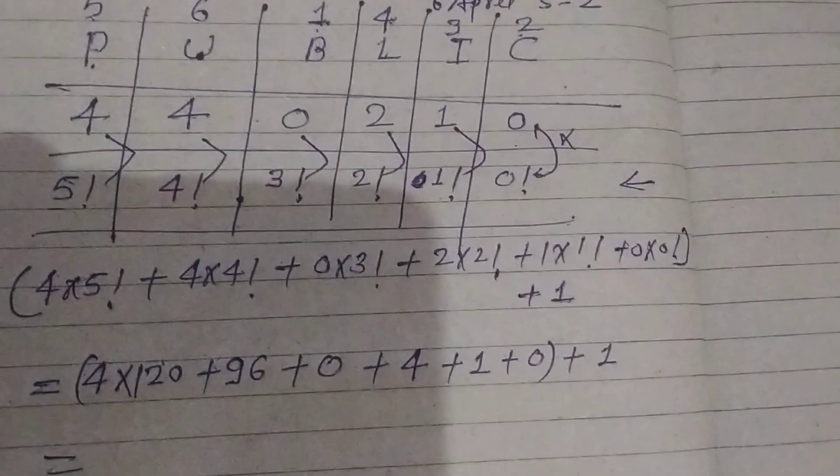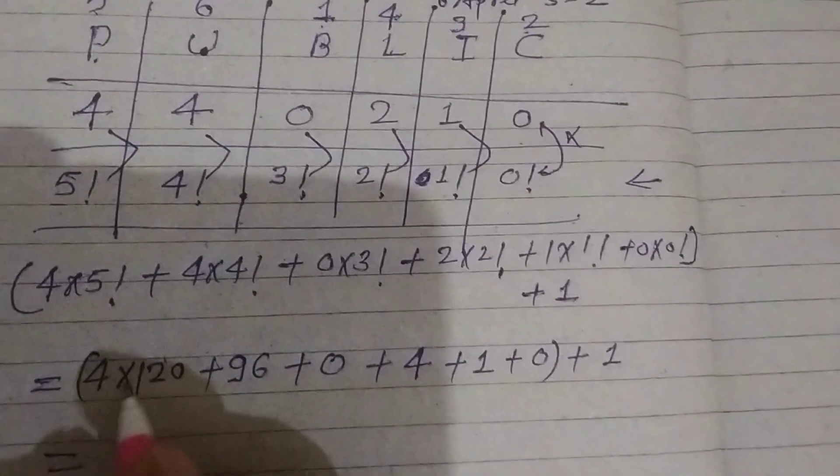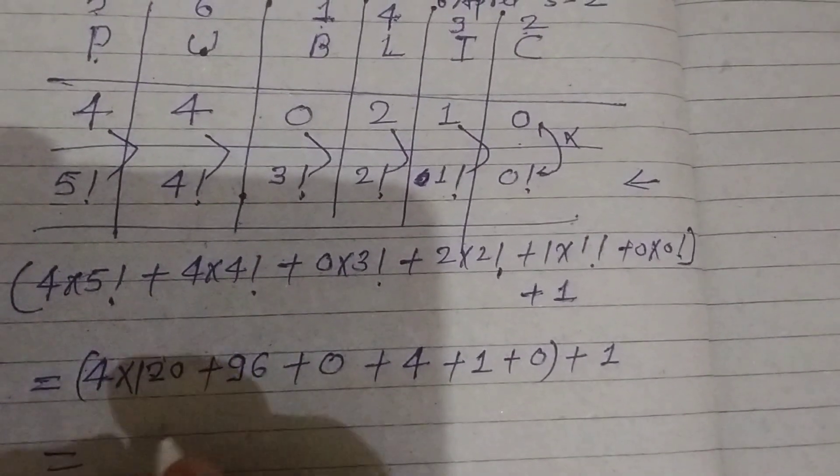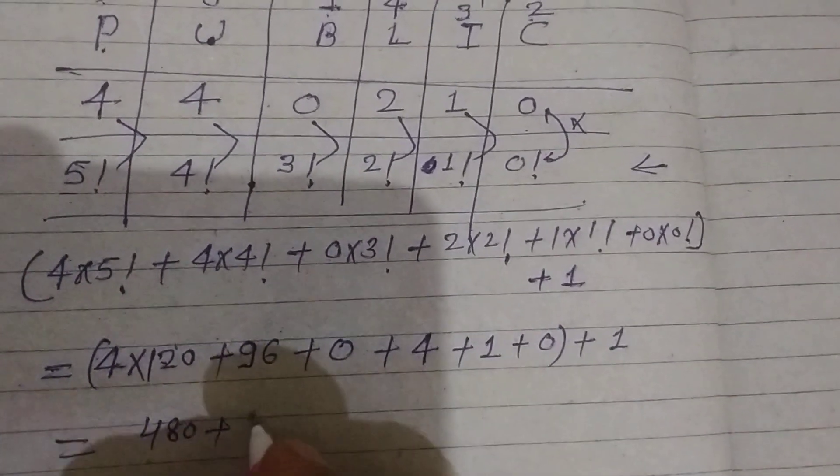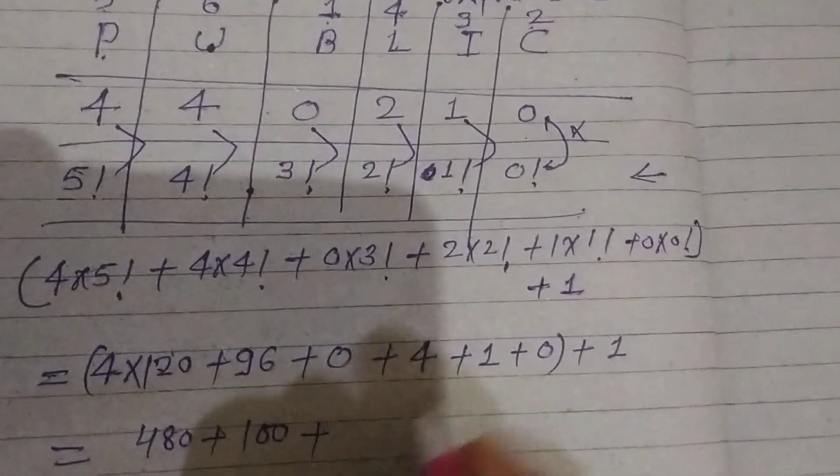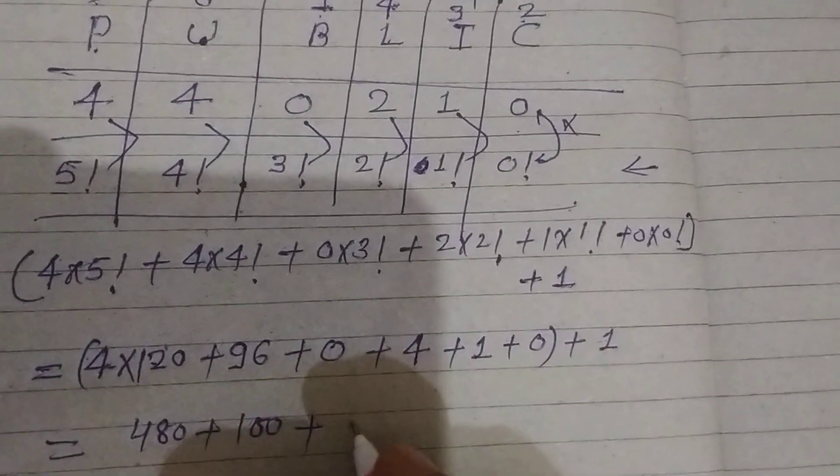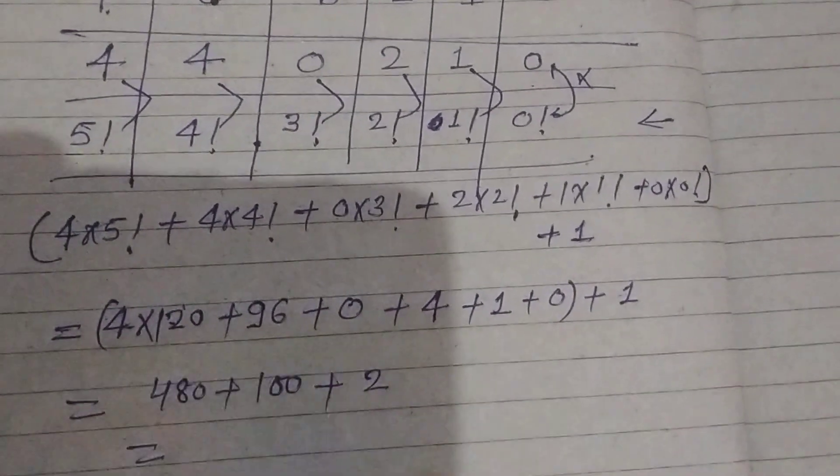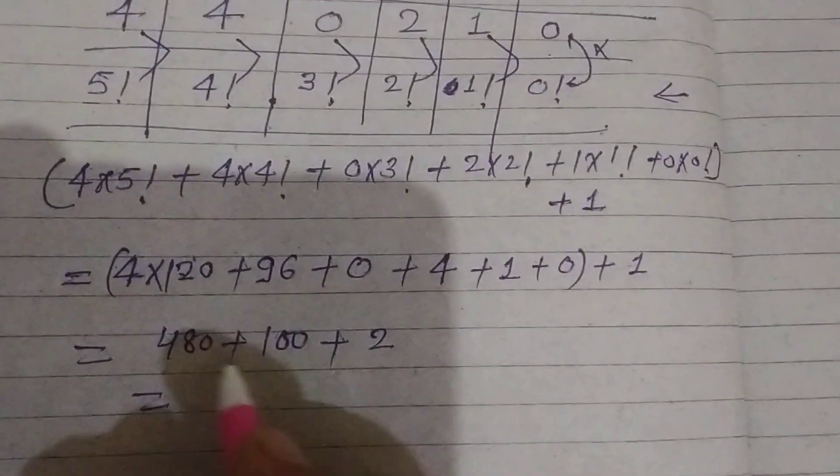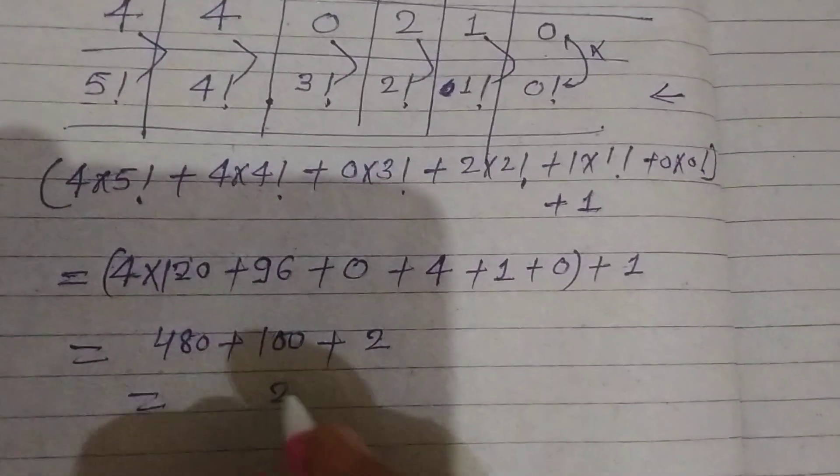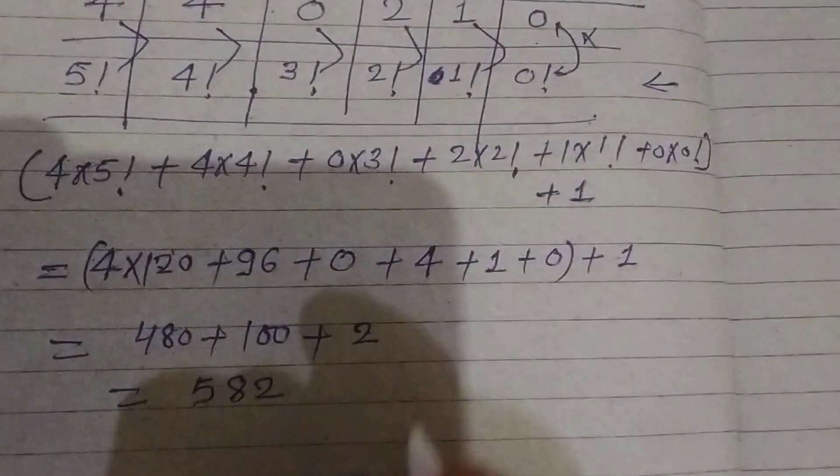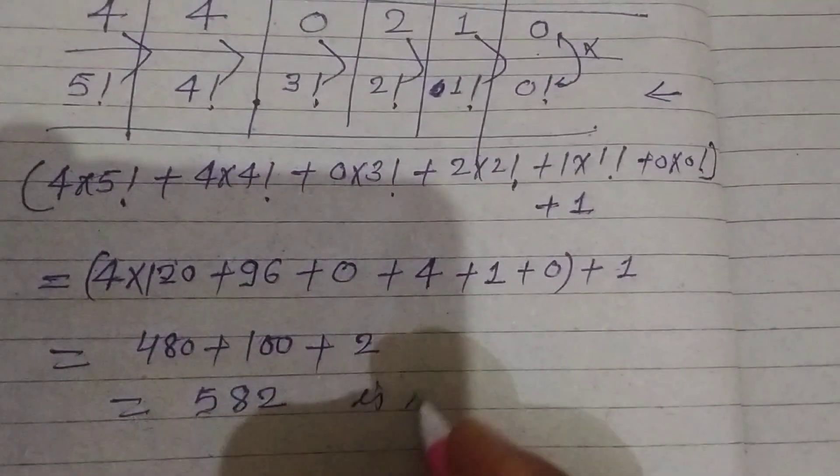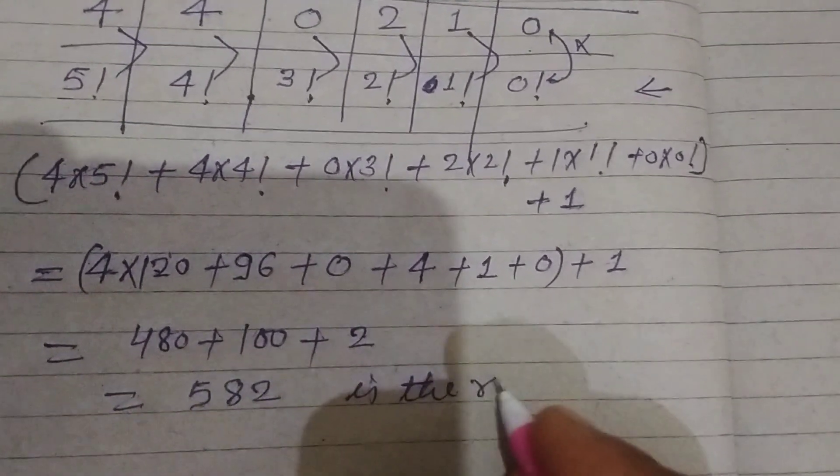So what we got? Here 4×120 is 480 plus 96 plus 0 plus 4 plus 1 plus 0, plus 1. This equals 480 + 100 + 2, which equals 582. This is the rank of the word PUBLIC.